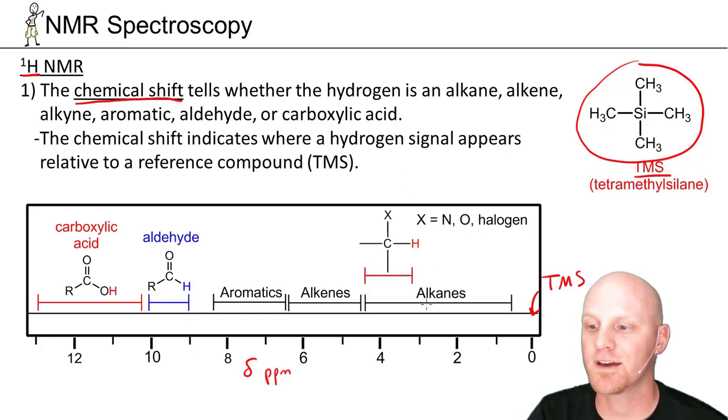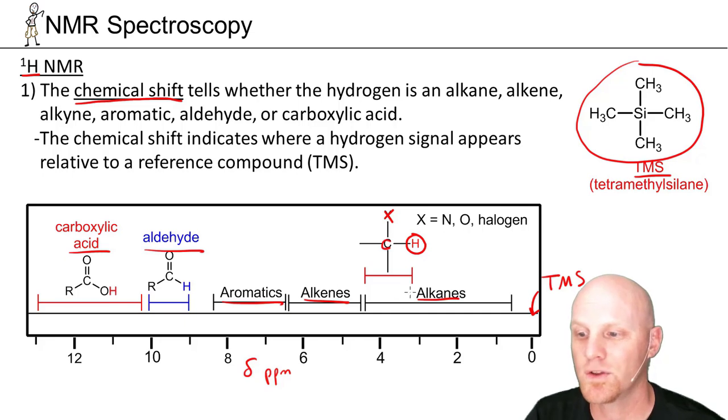But again the chemical shift here is going to let us know if we're in an alkane, an alkene, an aromatic, an aldehyde, or a carboxylic acid. And technically alkynes down here somewhere around two and a half. Just not common so I'm kind of leaving it off my table here. You'll also see that we've got one special subset of the alkane region and that's a hydrogen bonded to a carbon that's next to an electronegative atom. And in such case that's the only way you kind of get downfield of three in this alkane region.